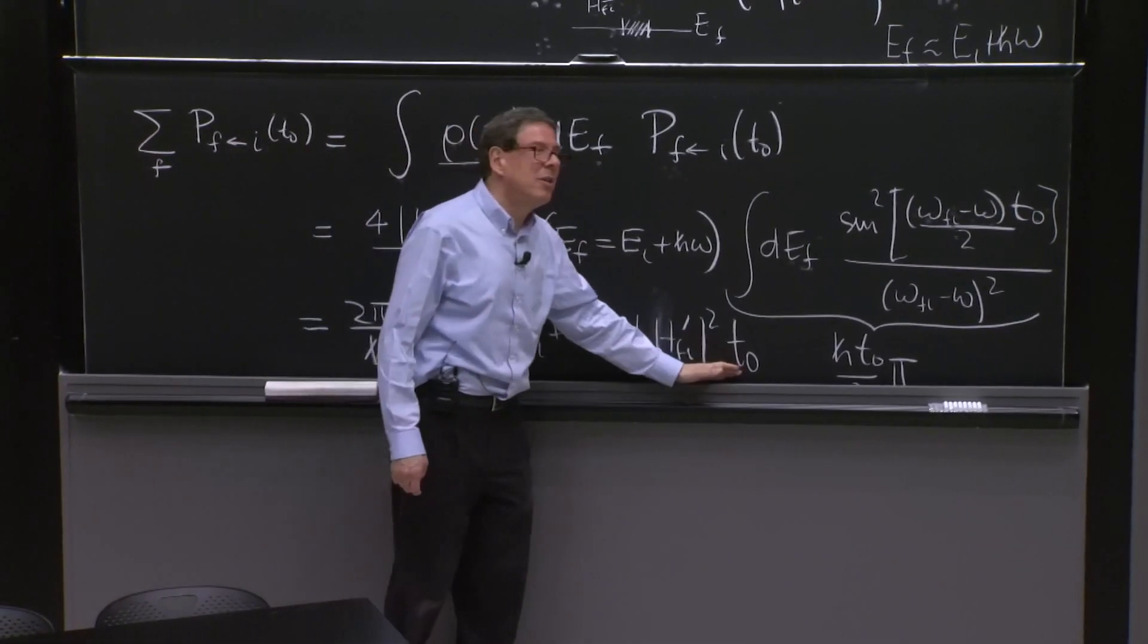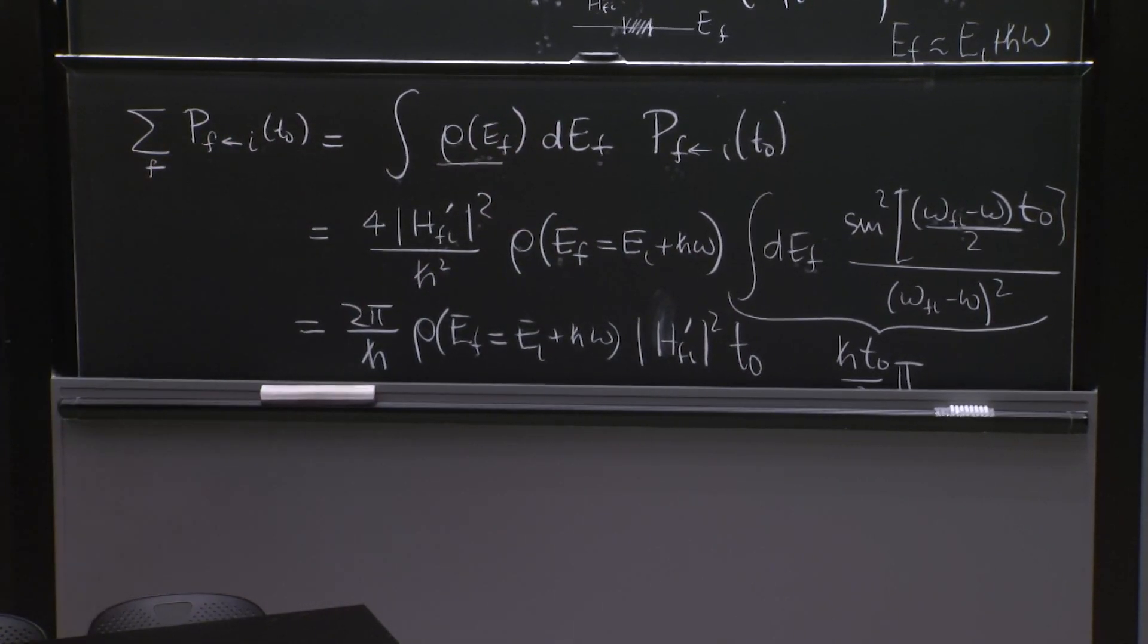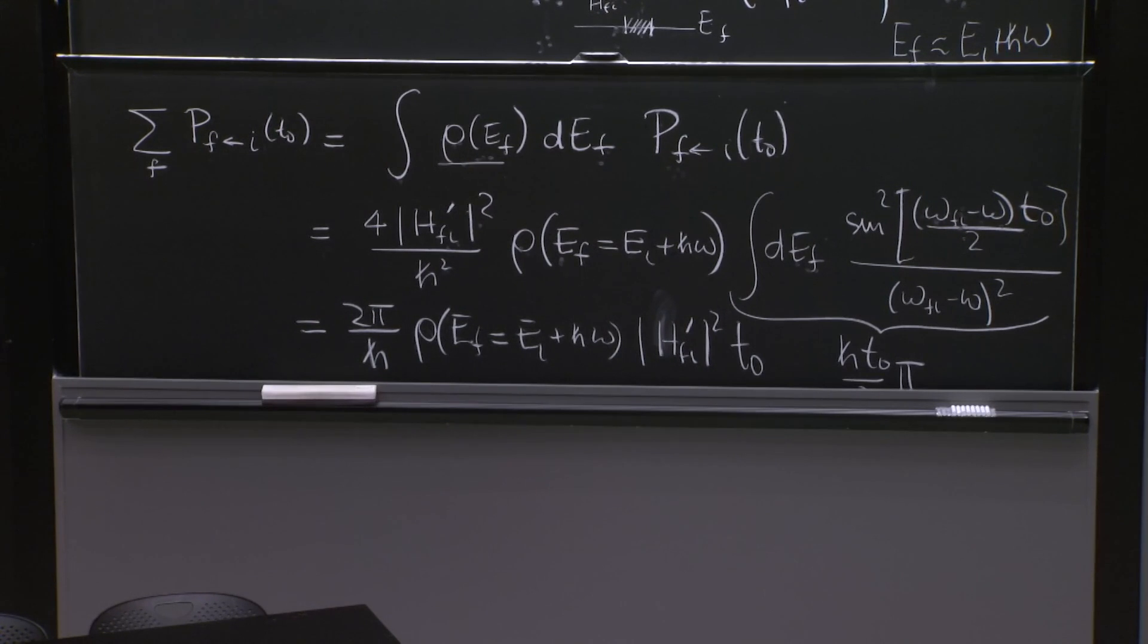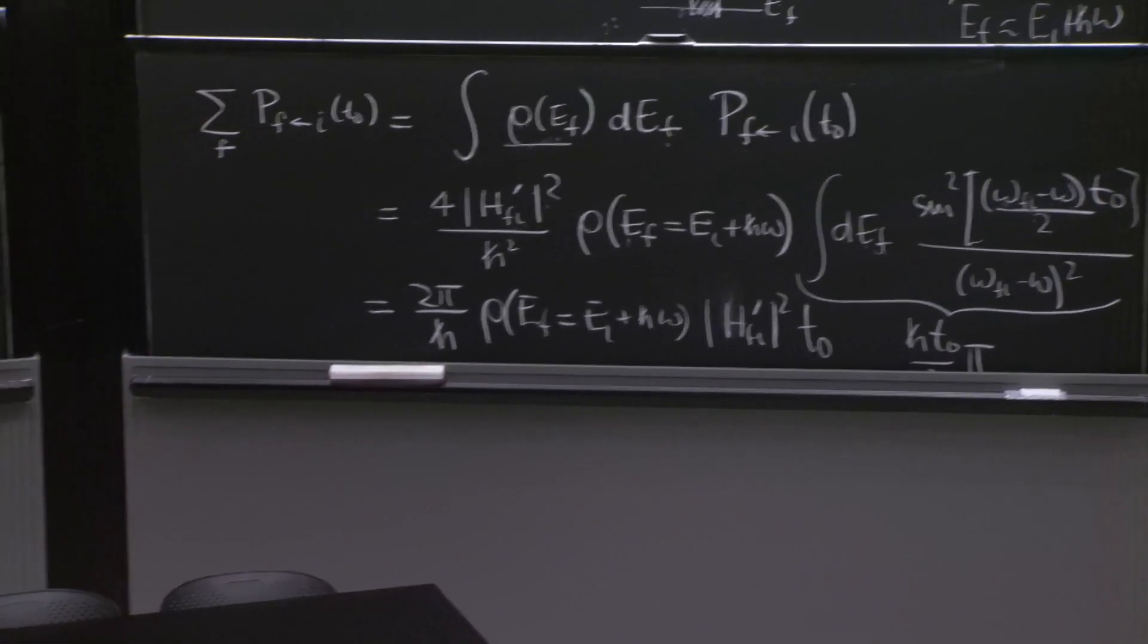So this PFI gives you the probability of transition after a time t0, happily, is proportional to t0. So you divide by the time that has elapsed. And it's a probability of transition per unit time.